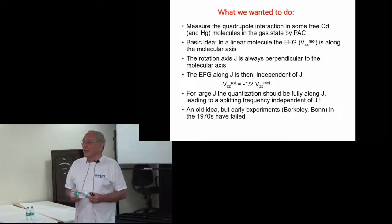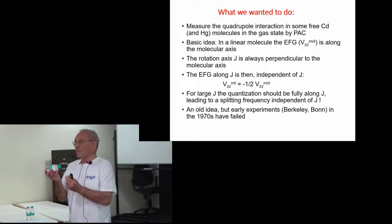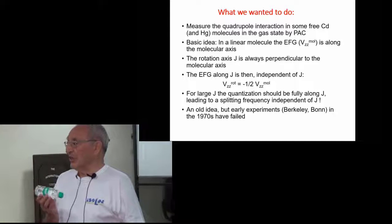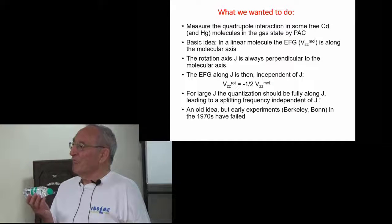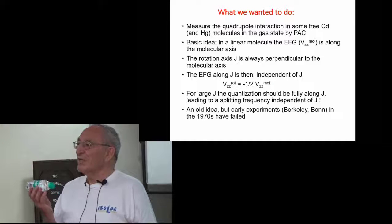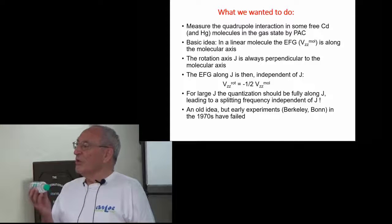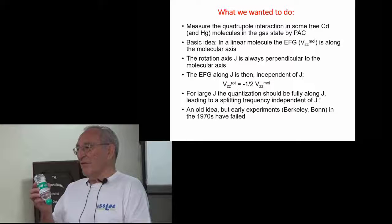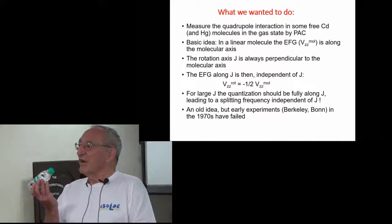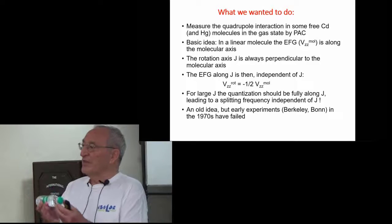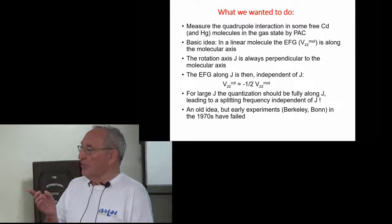Well the idea is that if you have a linear molecule in a gas state, particularly at the temperatures I will talk about, there's a lot of motion going on and a lot of rotation. The rotation is actually the big problem because if different orientations exist in the field gradient, then there will be different components.